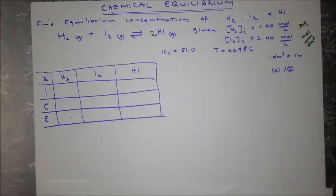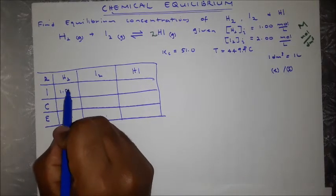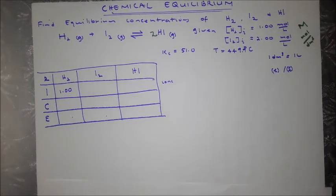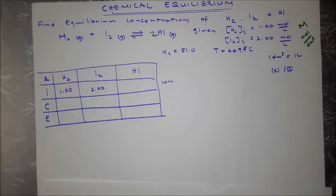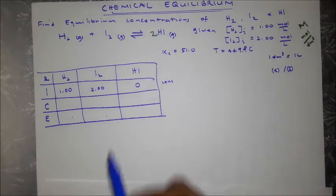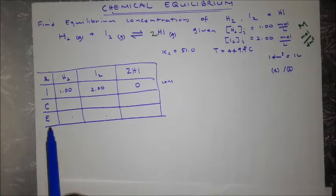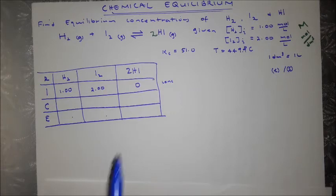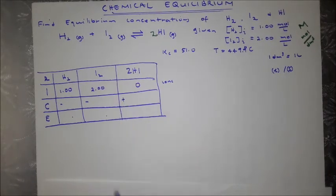Initially, the concentration of H₂ is 1.00 mol/L and I₂ is 2.00 mol/L. At the initial stage we have no product, so [HI]₀ = 0. As the reaction progresses, the reactants decrease (negative change) and the product increases (positive change).